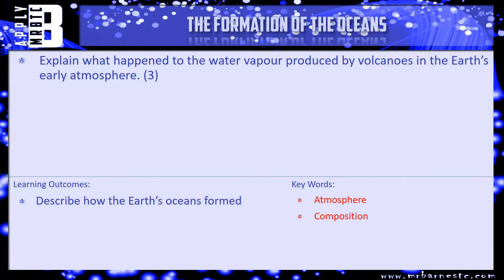Let's see what the examiner can ask you. The question is: explain what happened to the water vapor produced by volcanoes in the Earth's early atmosphere. Three points, three marks — think back to what we've talked about in the video. Pause it, have a go, and we'll see how you've done in a minute.